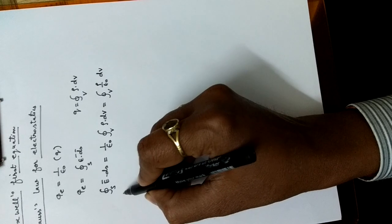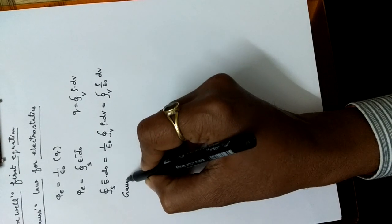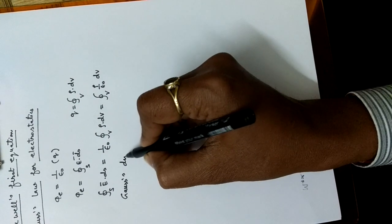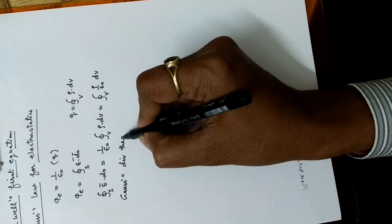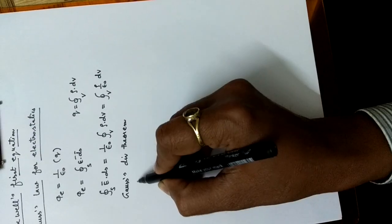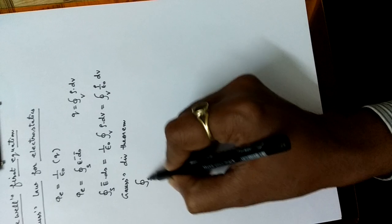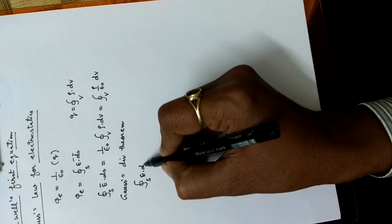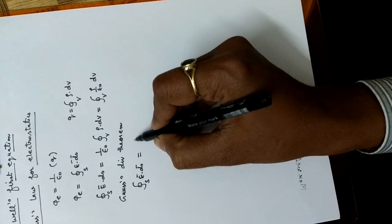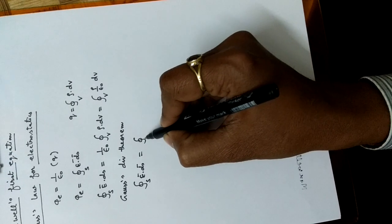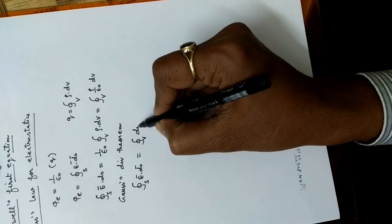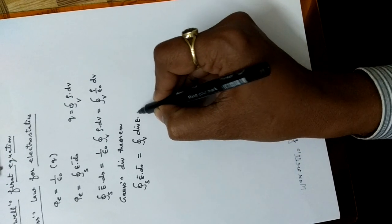Now we can apply Gauss divergence theorem, which is surface integration of electric field is equal to the volume integration of divergence of that electric field.